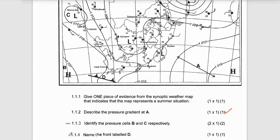Question 1.1.4 says: name the front labelled D. This front labelled D here is called the cold front.